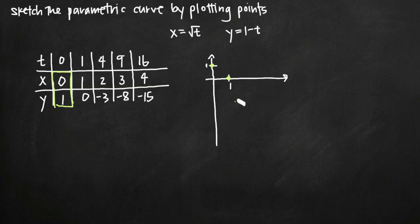Then we have the point 2, negative 3. So if we go over to about 2, and then maybe 1, 2, and 3, something like this. And then we have 3, negative 8, so we go out one more, 3, and the point is that that's going to be way down low here, so you can start to see the pattern.